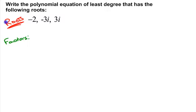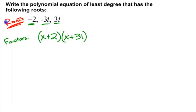The factor for a root of negative 2 would be x plus 2. The factor that would create negative 3i as an answer would be x plus 3i. And the factor that would create positive 3i as a root would be x minus 3i. To come up with the equation based on those roots, we need to set this as an equation equal to 0, which would lead those factors to create those roots.